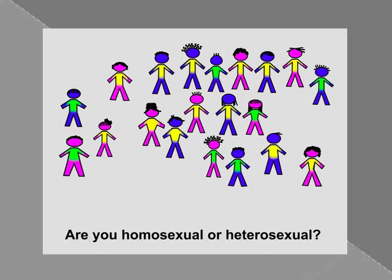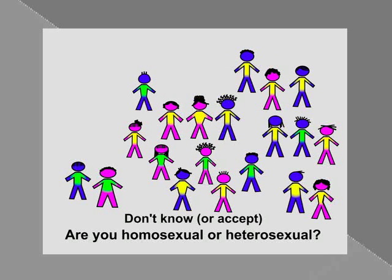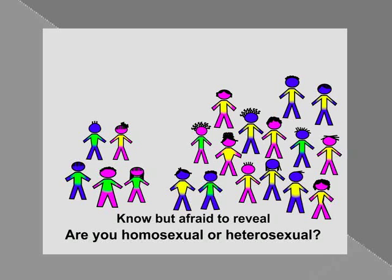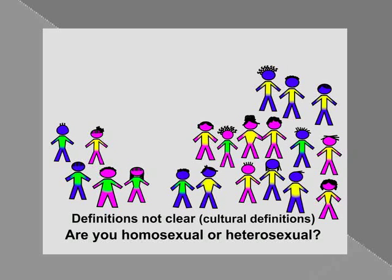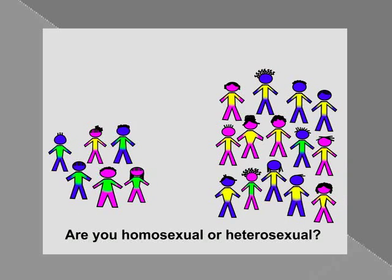Why does this occur? When you ask that question, someone may not really know, or they may not have accepted their sexual identity or sexual orientation. Perhaps they know but they're afraid to reveal that. The other thing that can happen is that definitions are not clear. That's why I wanted you to think about this difference between identity and behavior and attraction, because those are very important distinctions to make. So if you just ask someone the simple question — are you homosexual or heterosexual — they may be scratching their head trying to figure out what you really want to know and how they are to answer that correctly. All of these things make these studies difficult.